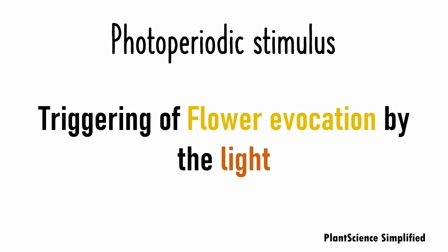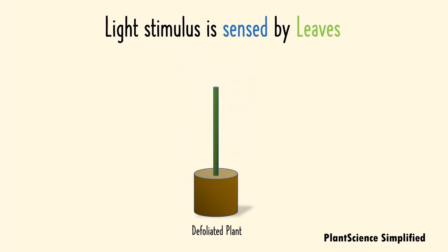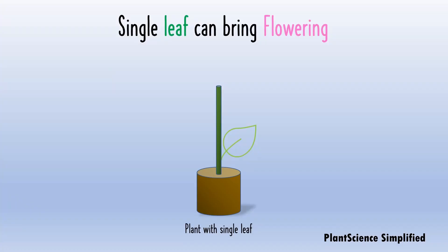Triggering of flower evocation by the light is called as photoperiodic stimulus. Light stimulus is sensed by leaves. To understand this, if we take a plant and remove all its leaves so it becomes a defoliated plant, and if we provide proper light conditions, then the flowering won't occur. But a plant with a single leaf can also bring about flowering when proper light conditions are given. This clearly suggests that leaves receive the light stimulus and start responding through photoperiodic inductive cycles.